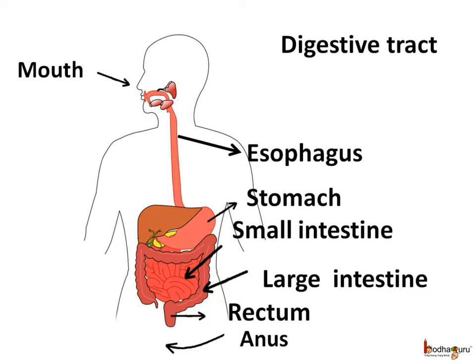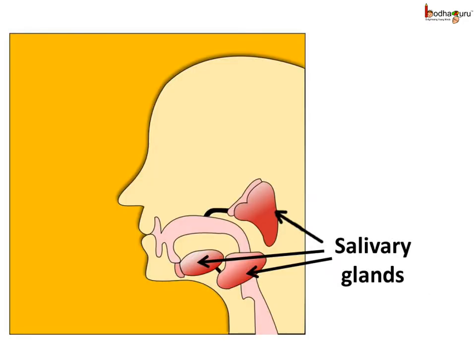Now, where do these reactions take place? In the digestive tract that starts with the mouth and ends at the anus. The digestive tract is also called the alimentary canal. So let us start from the beginning.